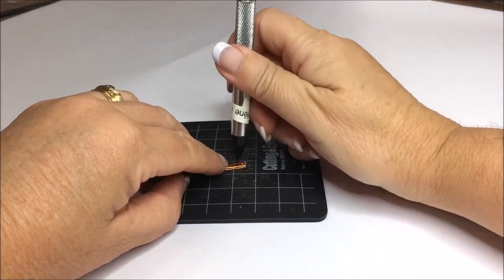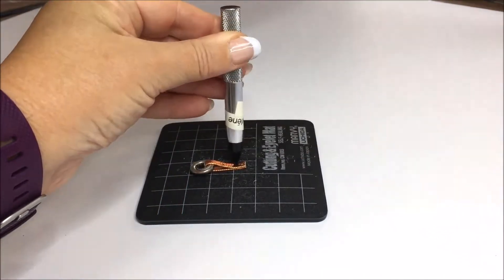Choose a hole punch slightly smaller than the shaft of the rivet and punch a hole at each of the marks.